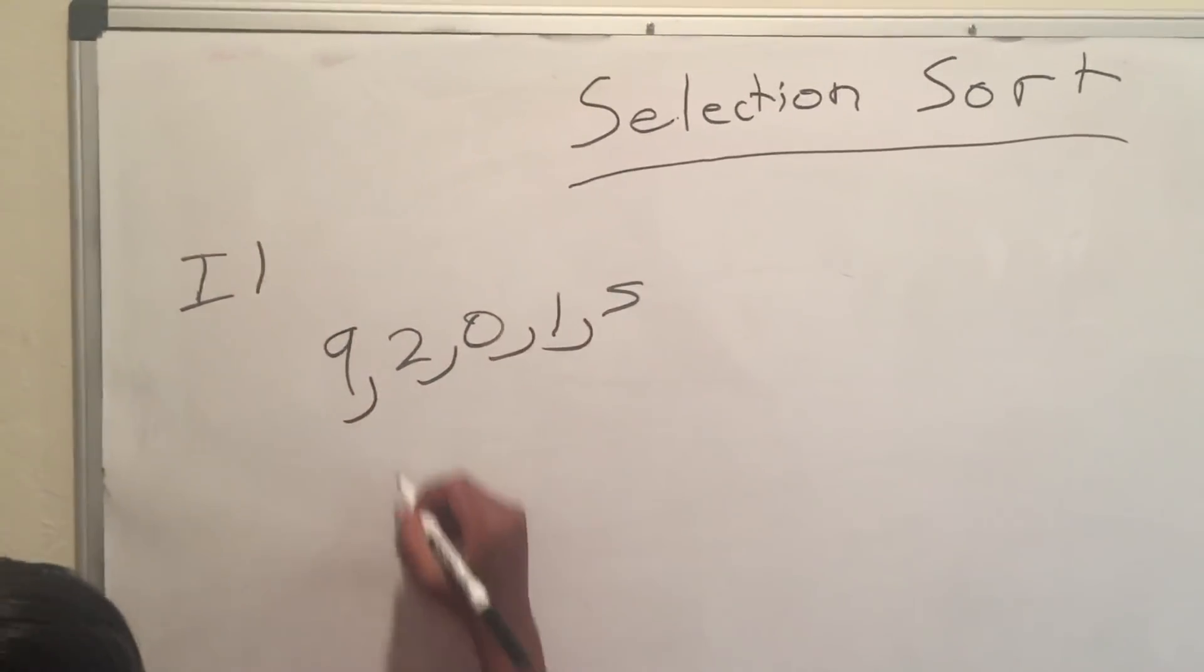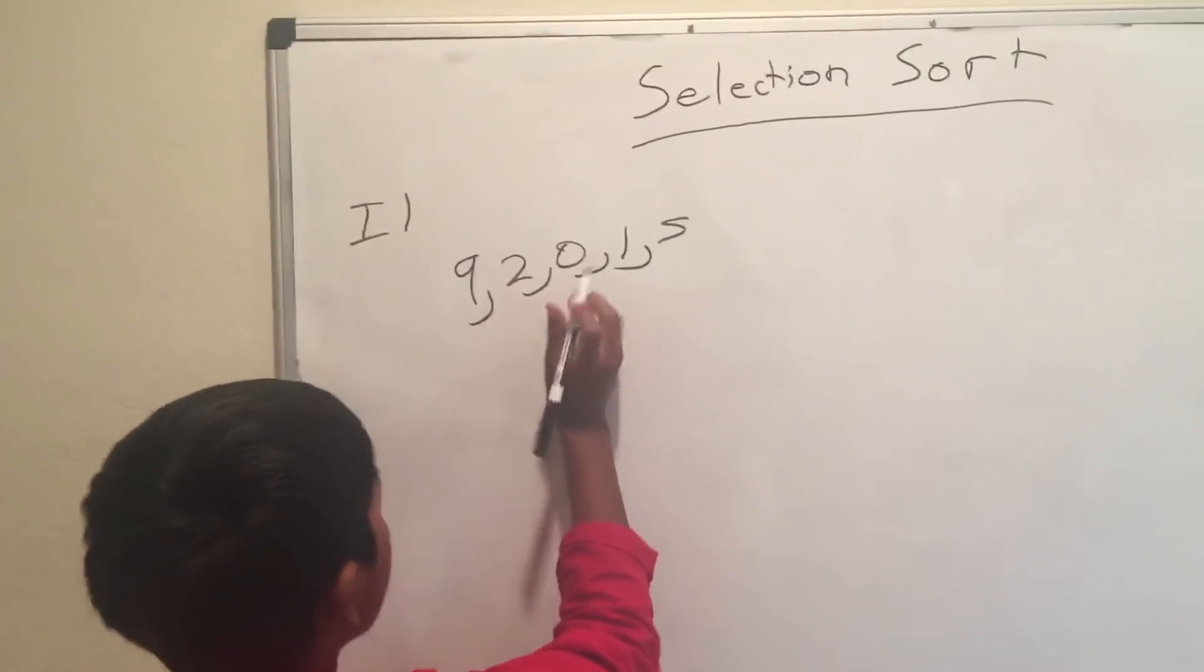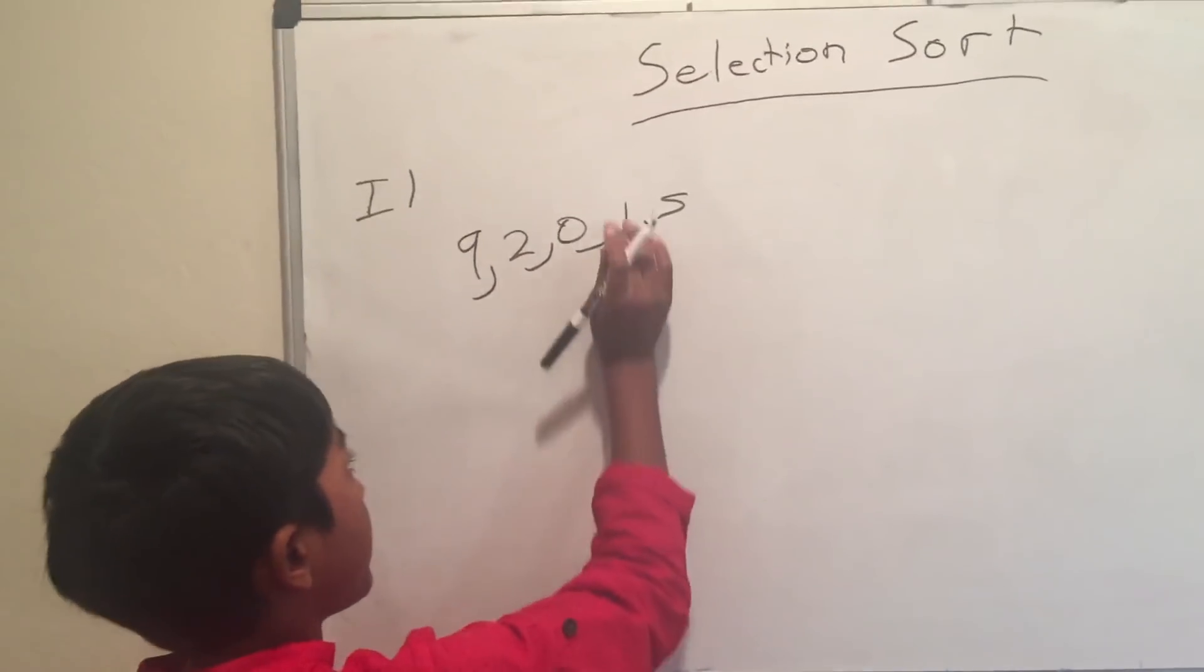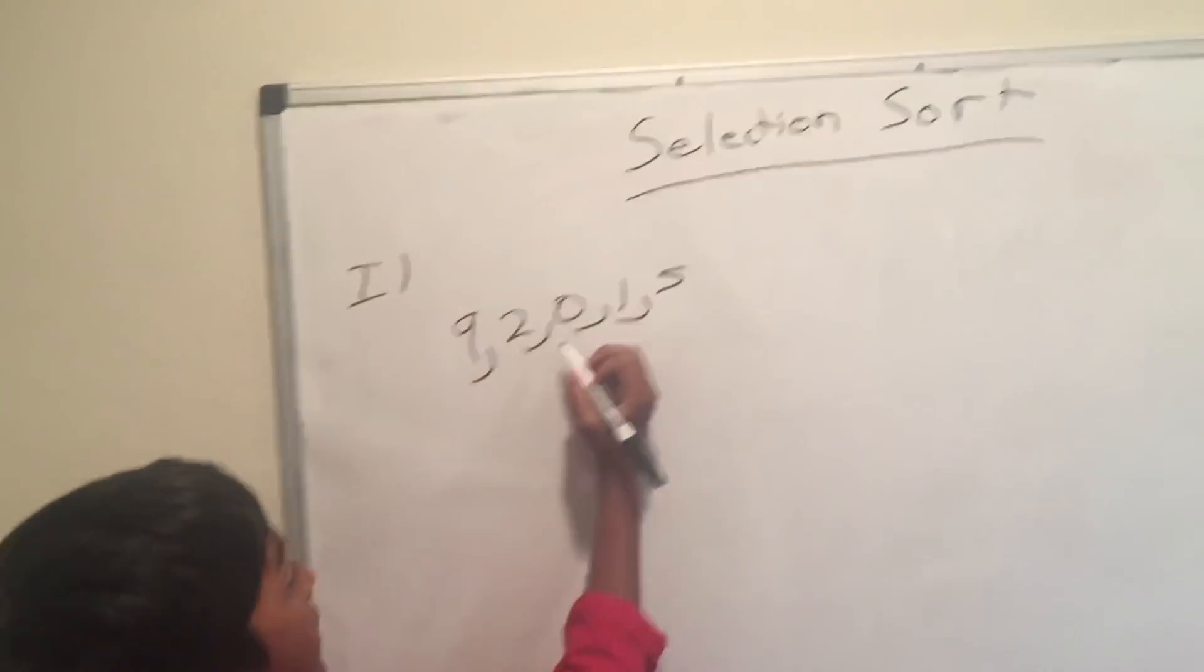So, you traverse this list, and you find which is the least. This is greater than this, so not this. This is greater than this, so not this. This is less than this, this is less than this. So, this is the least.